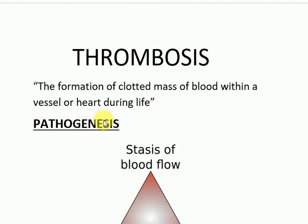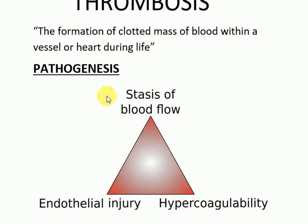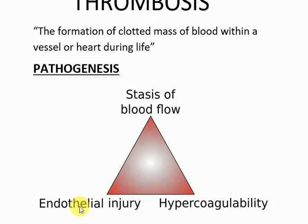To understand the pathogenesis, there are three factors involved. You have to memorize this triad known as Virchow's triad, involving endothelial injury, stasis of blood flow, and hypercoagulability. Endothelial injury is caused by any inflammatory process, hypertension, bacterial toxins, or cigarette smoking — anything that damages the innermost lining of the vessel, which is the endothelium. This causes exposure of the subendothelial matrix or collagen to platelets, which then initiate the process of clot or thrombus formation.